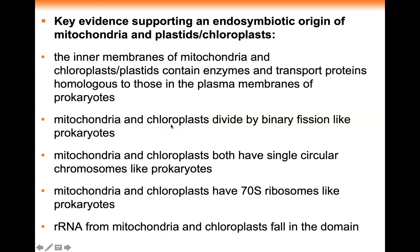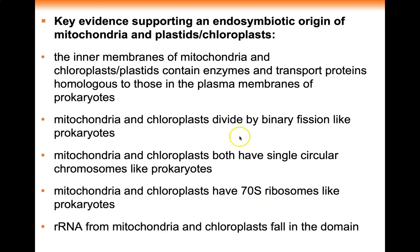You see similar proteins and enzymes in the mitochondria membrane, chloroplast membrane, as well as prokaryotic membranes. Additionally, mitochondria and chloroplasts divide by binary fission, just like bacteria. Mitochondria and chloroplasts both have single circular chromosomes — just one singular circular chromosome, like prokaryotes. Mitochondria and chloroplasts have 70S ribosomes like prokaryotes do, whereas eukaryotes have 80S ribosomes.